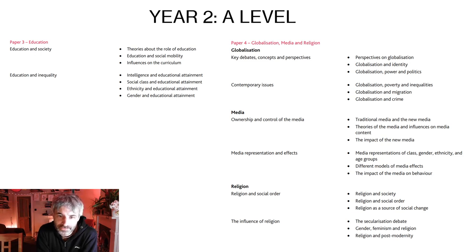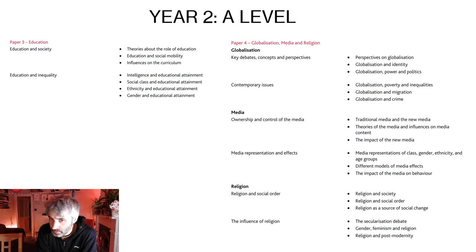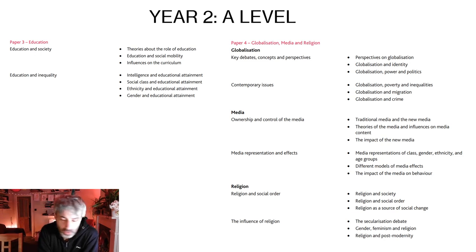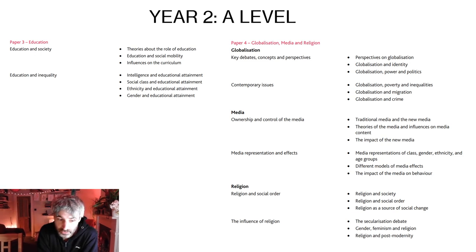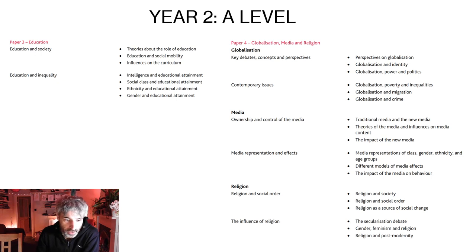And then in paper four we have a choice — we have options. We have to choose two of three options: globalisation, media, and religion. All very interesting, they're all very interrelated, and depending on the interests of the group we can choose which ones we do.